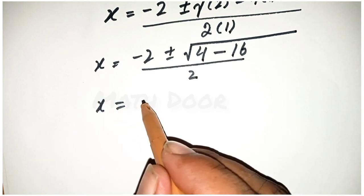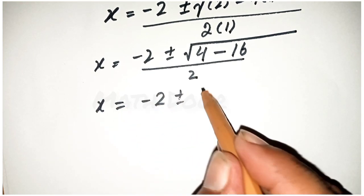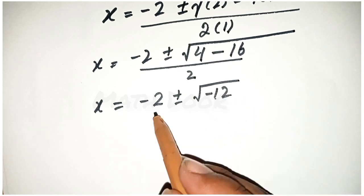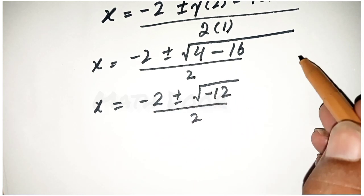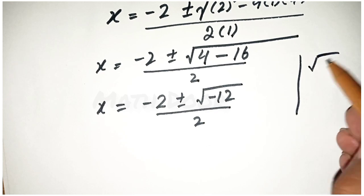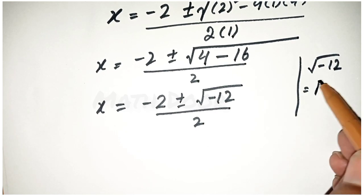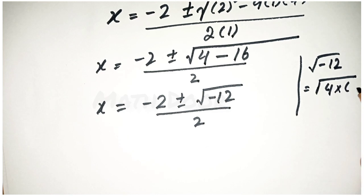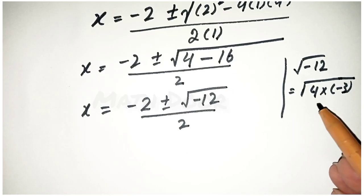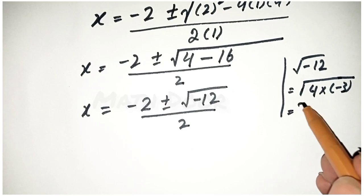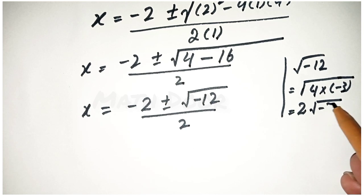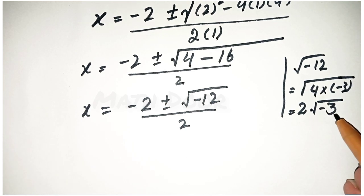x is equal to minus 2 plus or minus square root of minus 12, over 2. We solve the square root of minus 12. We can write this as square root of 4 multiply minus 3. The square root of 4 is 2, so we get 2 square root of minus 3.